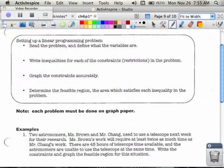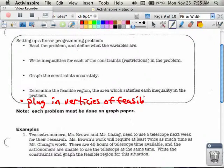And then the fifth step, which they don't have listed here, but I would add, is we are going to, in addition to this, plug in each of the coordinates of the vertices to solve. So I'm going to add that right now, step number five: Plug in vertices of feasible region to find the solution.